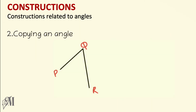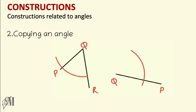The next section is how to copy a given angle to another place. An angle PQR is given. Draw any line and name it QP. Keep the compass on Q in the original angle and draw an arc cutting both arms. Without changing the compass length, come to the new Q and draw an arc. Measure the arc length from point X, then bring it to the intersection of that arc with line QP and draw another arc. Join Q to the intersection and name it R. The two angles are equal.